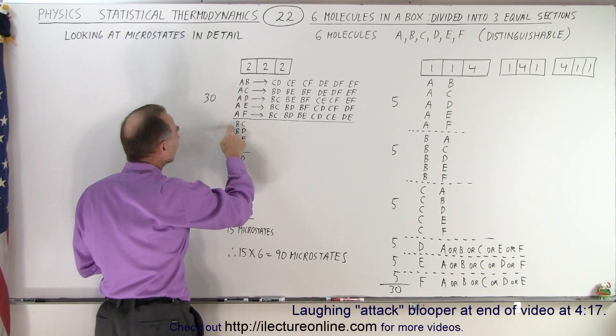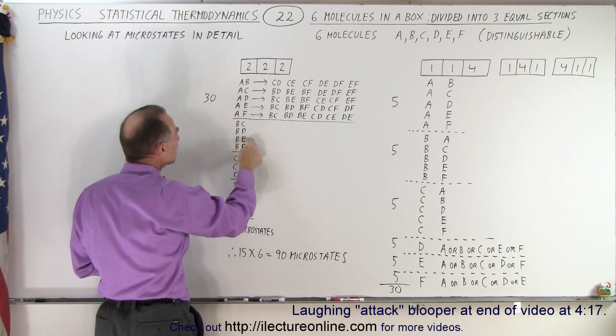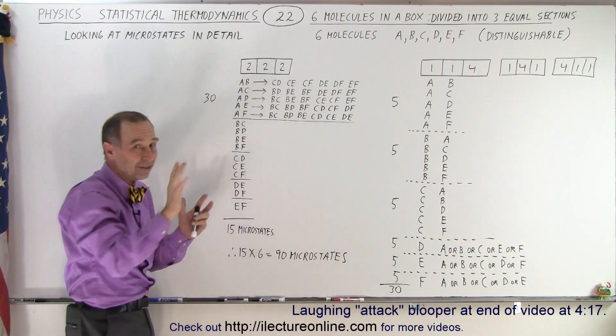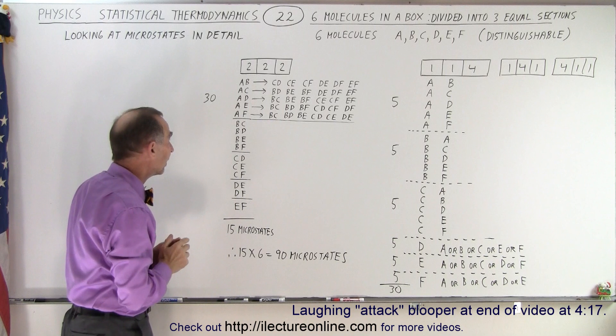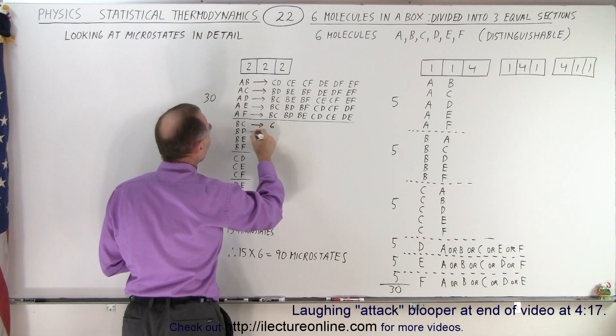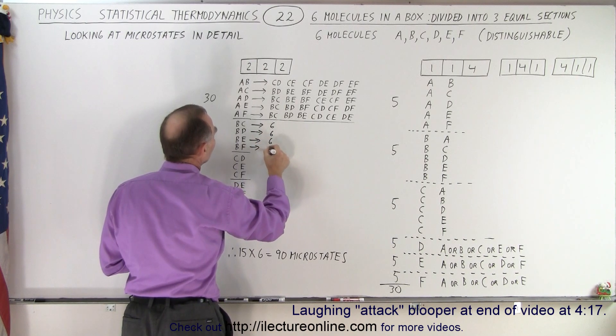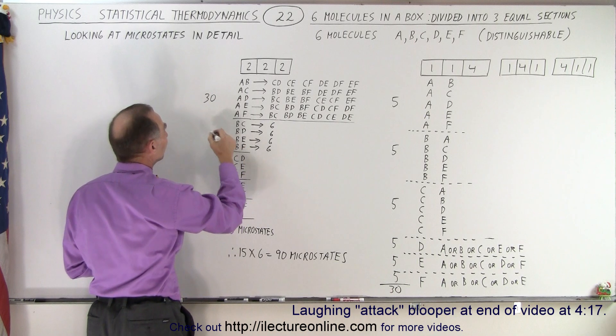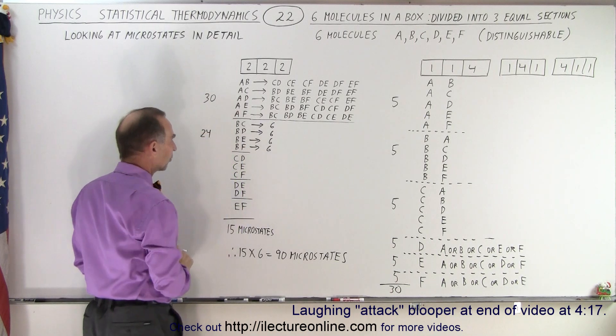Then if we take B then we have B, C, B, D, B, E, and B, F. We can't take B, A because we already have that over here. A, B and B, A is the same thing so we can't put that there. But again for each one of these four we'll have six, six, six, and six different combinations that can be placed into the middle box. So four times six is twenty-four total microstates.